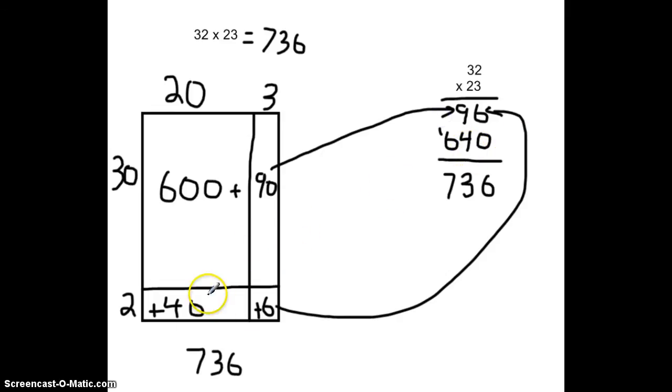This 40 down here is equal to the 40 here that results from multiplying 20 times 2. So this 40 here, these two are the same in our algorithm. And this 600 is actually this 600 here. So we can see these models are very similar.